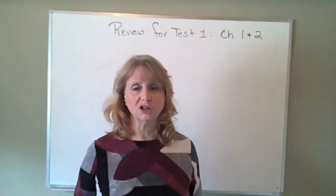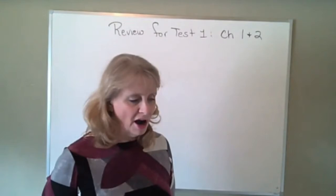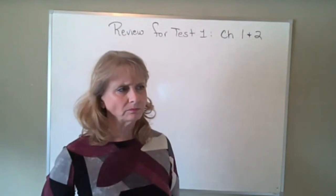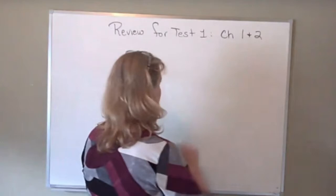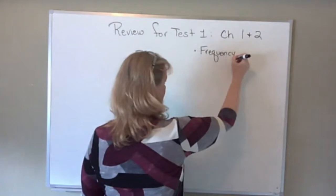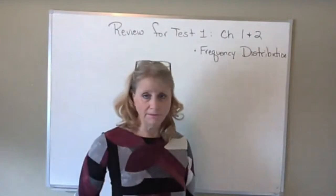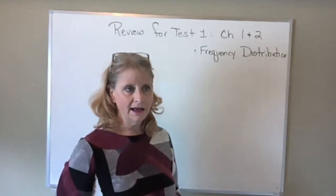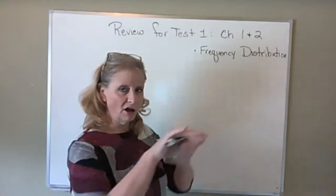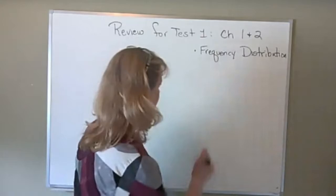I'm going to talk about what's on the test and then I'll answer questions. There aren't a whole lot of questions from chapter one — most of them are from chapter two. Some big things you need to make sure you know how to do: complete a frequency distribution. There's going to be a question on the test worth more points than any other question because it has so many parts. Make sure you practice on those questions — I want to say it's section 2.1, where they have you fill in all the columns of a frequency distribution.